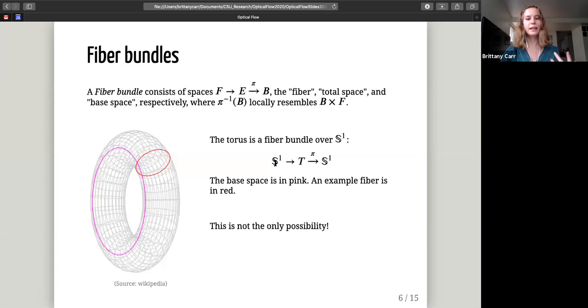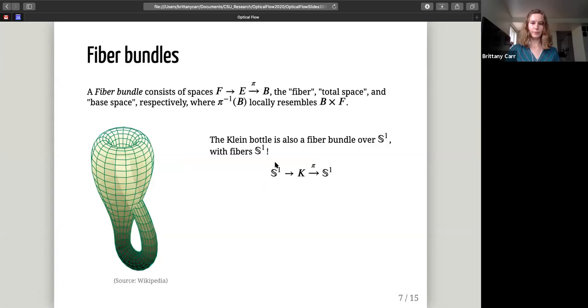But fiber bundles can be a little misleading, because this is not the only possibility I get for a circle's worth of circles. I could also have something like the Klein bottle. Because the Klein bottle is also a fiber bundle over S^1 with fibers S^1, but we have this weird twist that we've introduced to our dataset. So whereas before we just connected it together, this one we connect it via this weird twist thing. So if we're going to have a model and we know it's going to be a circle's worth of circles, we're going to have to be able to distinguish whether or not we're looking at a torus or whether we're looking at a Klein bottle.